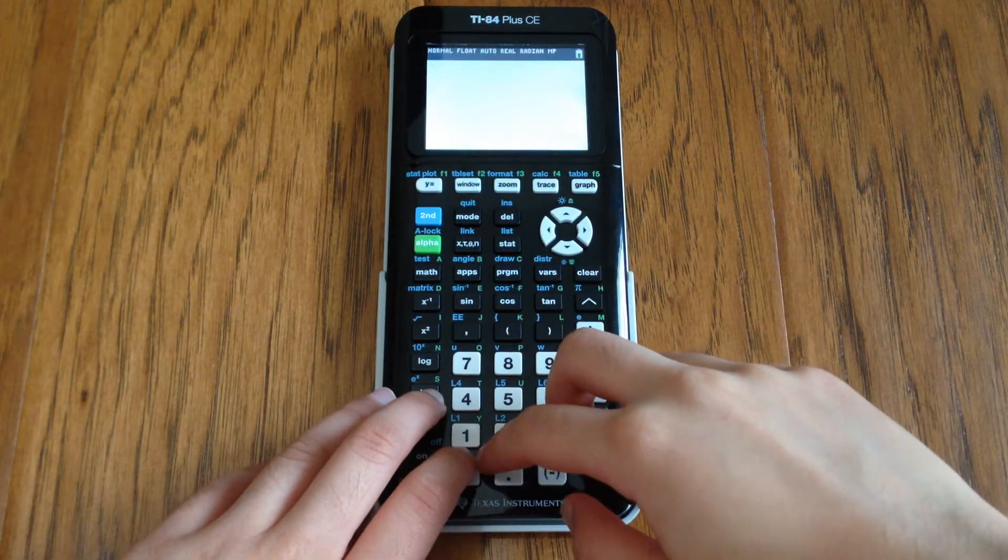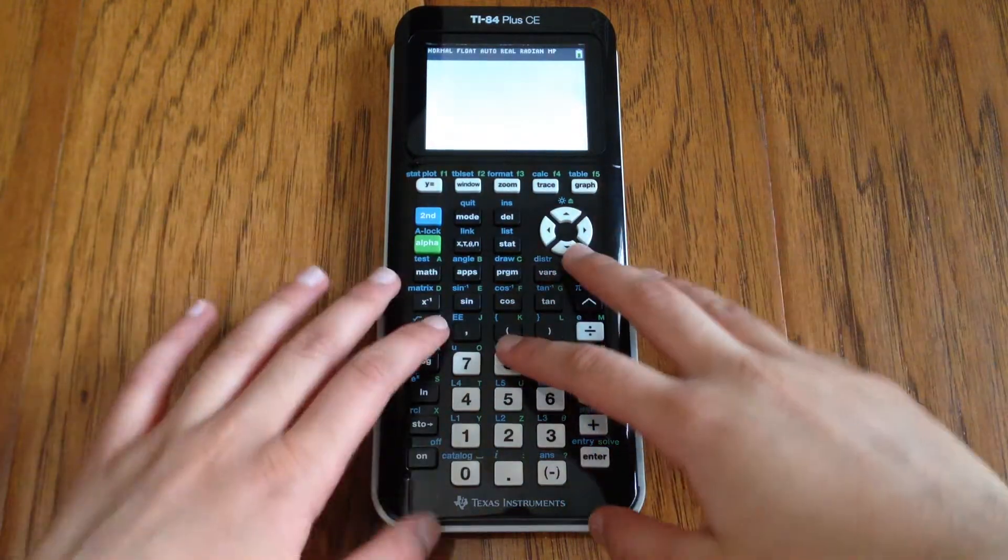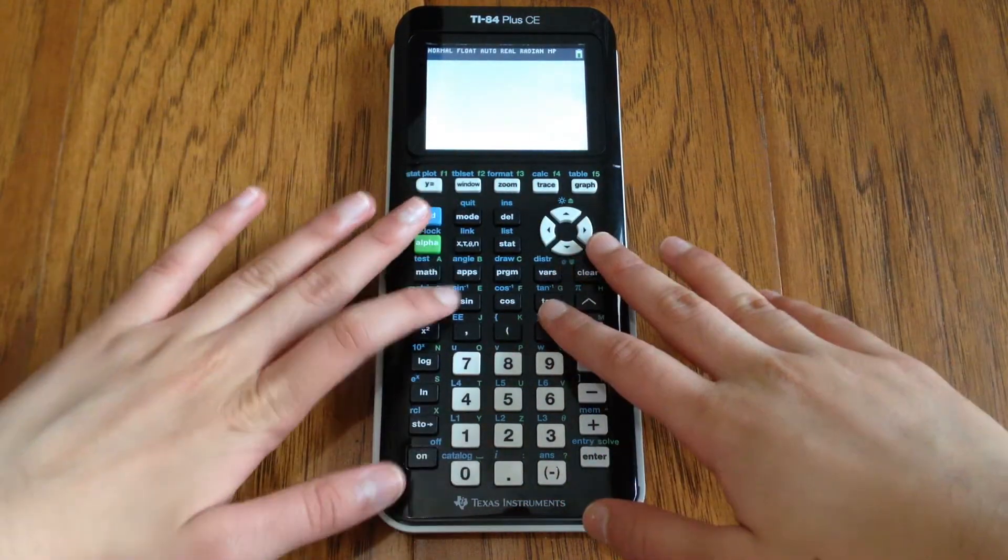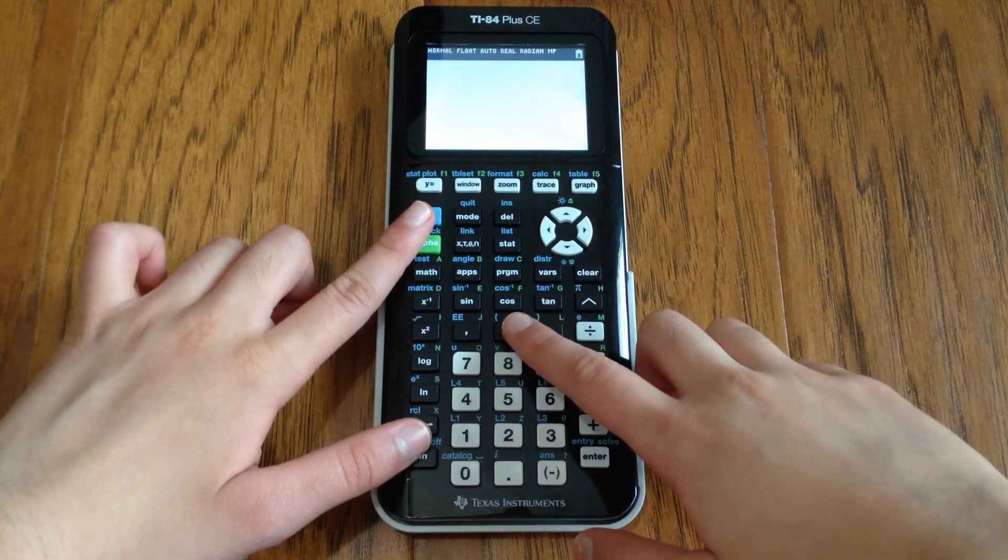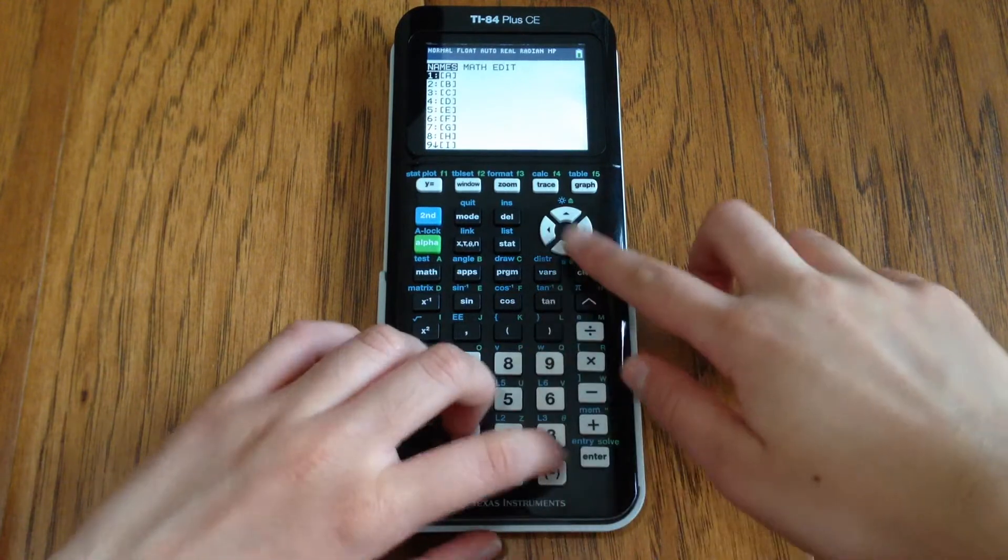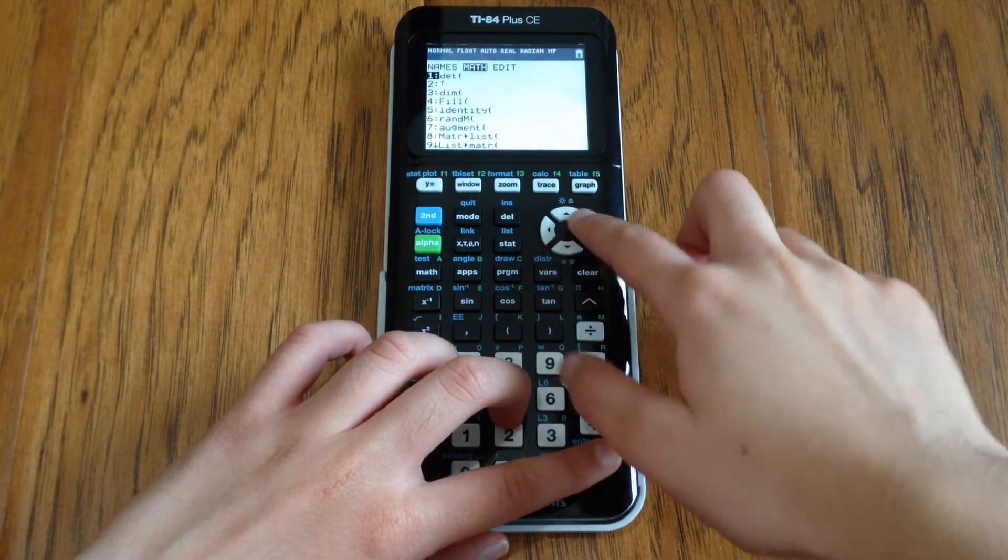So here we go. The way to access the menu for matrices is to click 2nd and x to the power of negative 1, and that gets you to all these matrices.